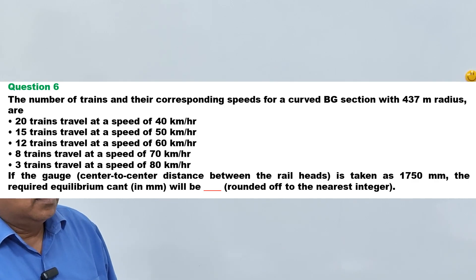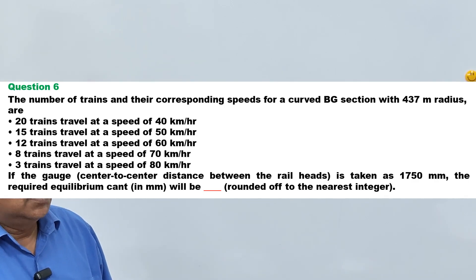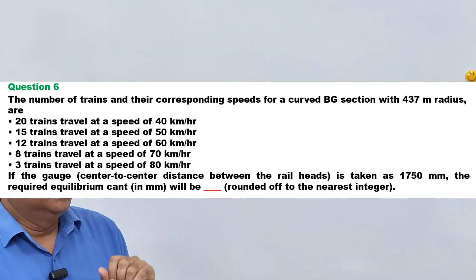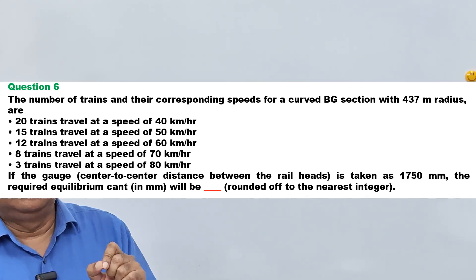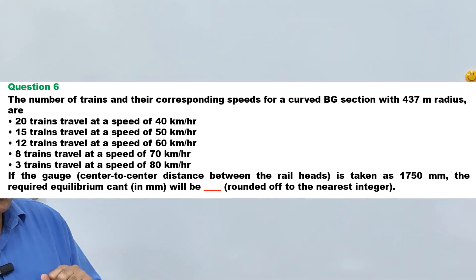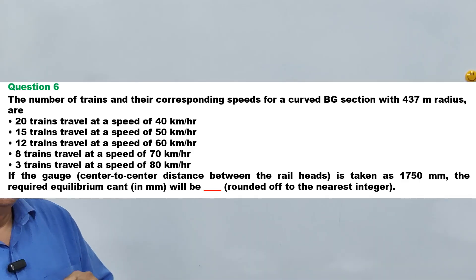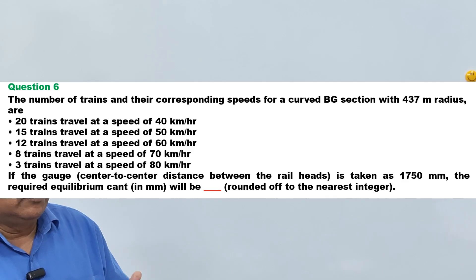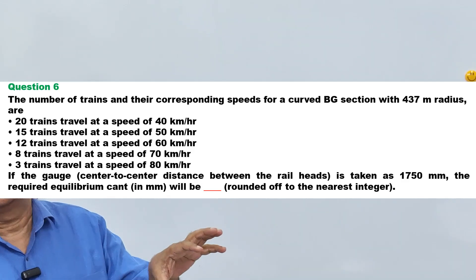The next question involves a curved broad gauge section with 437-meter radius. The train speeds are: 20 trains at 40 km/h, 15 trains at 50 km/h, 12 trains at 60 km/h, 8 trains at 70 km/h, and 3 trains at 80 km/h. The dynamic gauge is 1750 mm. In such mixed traffic conditions with slow and fast trains, we find the equilibrium speed as the weighted average speed of all trains.